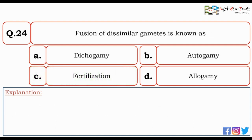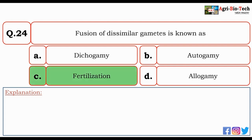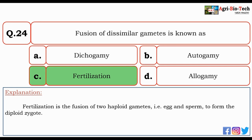Next question: fusion of dissimilar gametes is known as — dichogamy, autogamy, fertilization, or allogamy? The correct answer is C — fertilization. Fertilization is the fusion of two haploid gametes, i.e., egg and sperm, to form the diploid zygote.